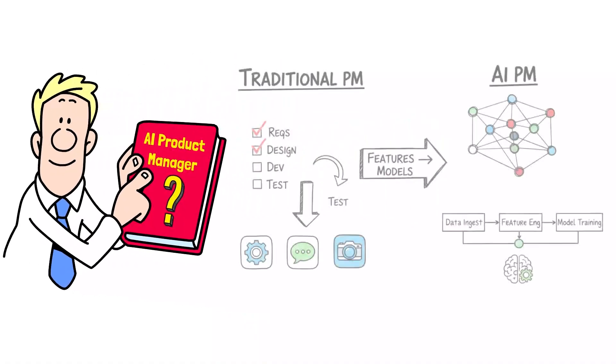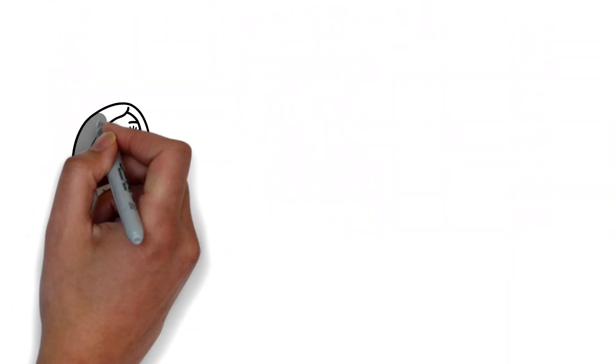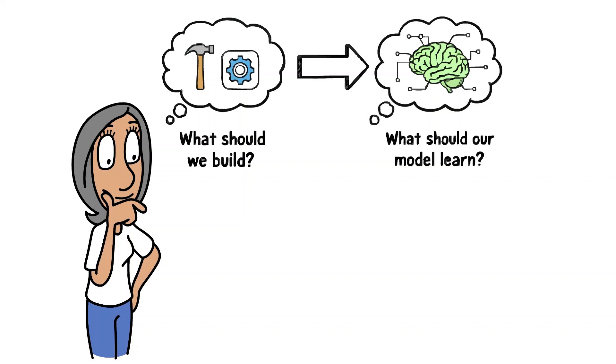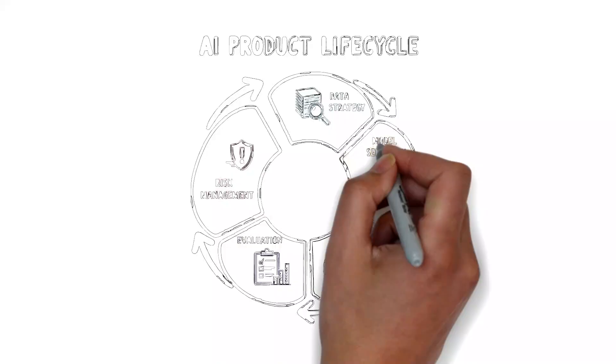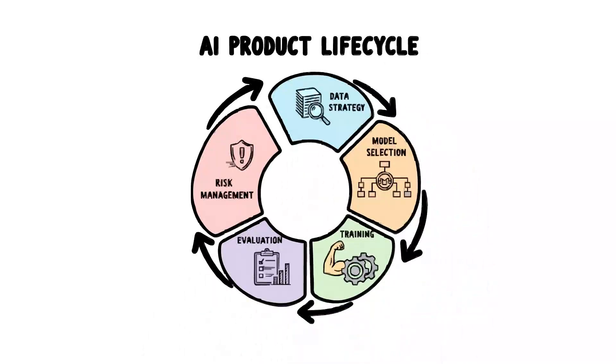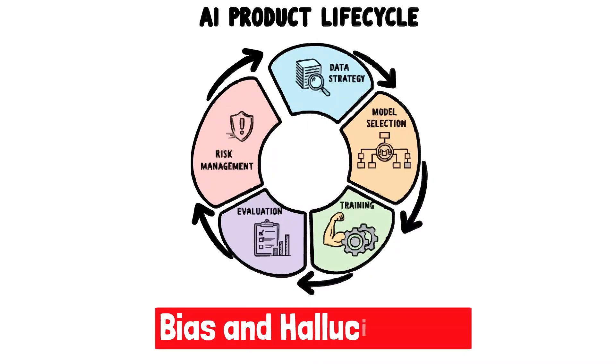It's a PM who shifts their focus from just managing features to managing intelligent systems. Instead of only asking what should we build, you're now asking what should our model learn. You're responsible for the entire lifecycle of an AI product, from data strategy and model selection to evaluation and managing the unique risks like bias and hallucinations.